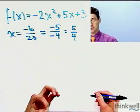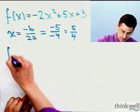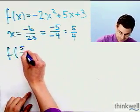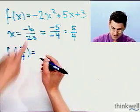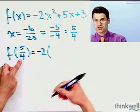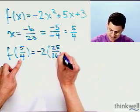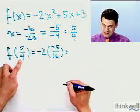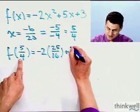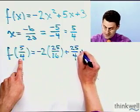So that's the x value of the vertex. How do I find the y value? Well, I plug this into f, so this is going to be a little bit of work. So I see negative 2 times 5 fourths squared, that's 25 over 16. And then I add to that 5 times 5 fourths, so that's 25 over 4, and then plus 3.